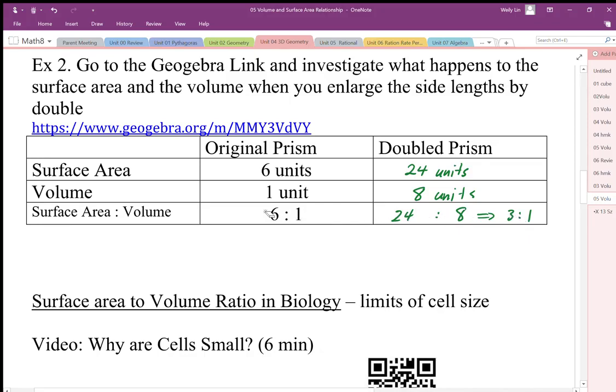So that doubling changes the surface area to volume ratio. We have less surface for the same volume when we talk about a small prism versus a larger prism.